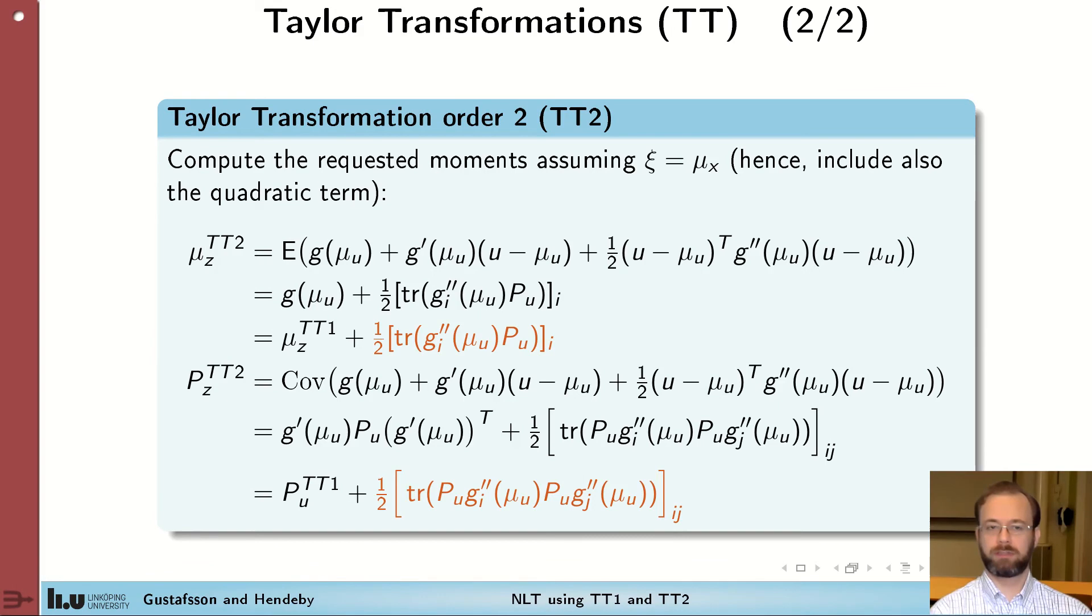If we also include the second order term in the expressions and then again compute the mean and covariance, we get these expressions. They are more involved than the linear case, of course. But we can see that to get the mean, we actually get the TT1 mean and then we add the term.